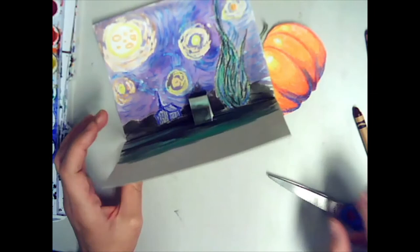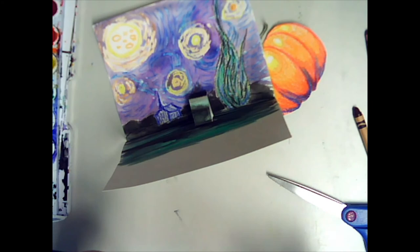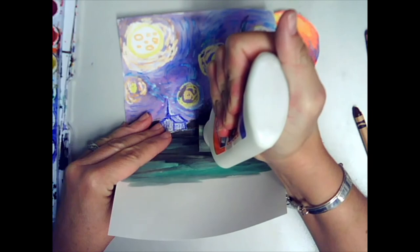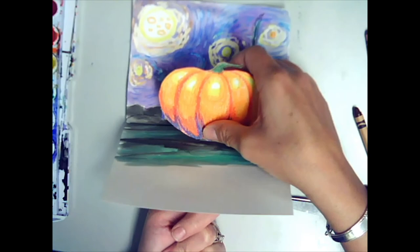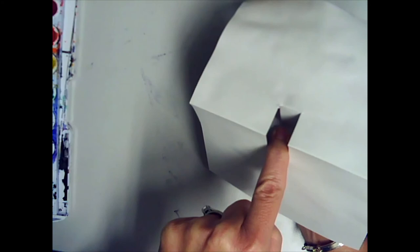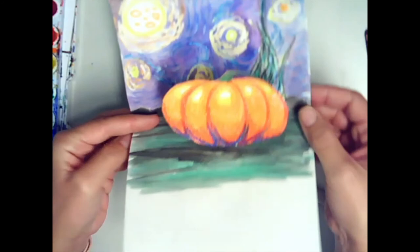Now I just need one dot of glue to put my pumpkin on. The less glue, the better. There we go. I'm going to hold it on here, I have one finger on the back pushing forward. I have one finger on the bottom of the pumpkin, and I'm going to let that glue dry. And now, I have a pretty cool Halloween pop-up card.